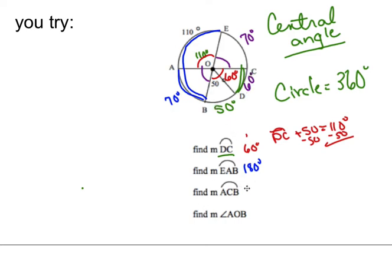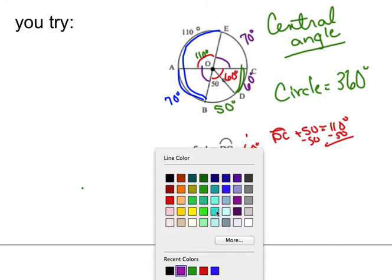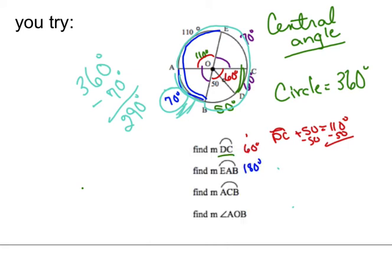So then it says to find the measure of ACB. Now, in order to find the measure of ACB, I'm going to get a whole different color. So if I look at ACB, where's C? So it goes all the way around here. So A, go through C, and I come back to B. Basically I'm doing everything except for this little piece right here. So for ACB, it's basically going to be 360 minus 70 degrees. Because 360 would be the whole thing, and I want to get rid of this little piece. So if I subtracted that, that's going to be 290 degrees. So ACB is going to be 290 degrees, because 290 plus 70 is 360.